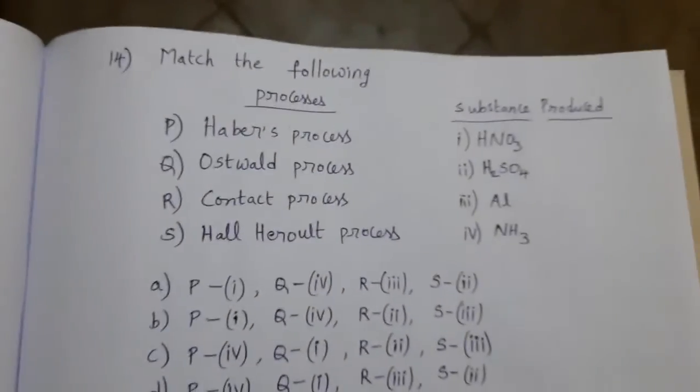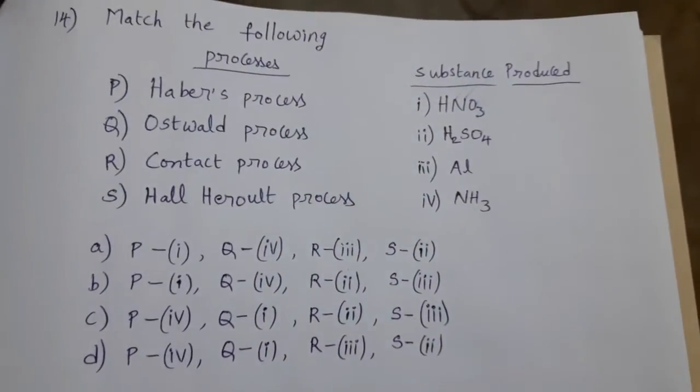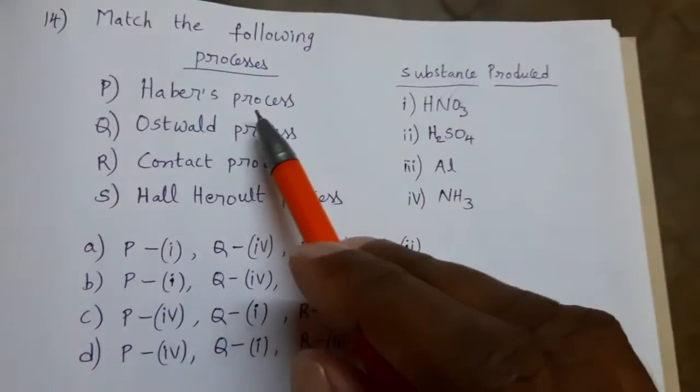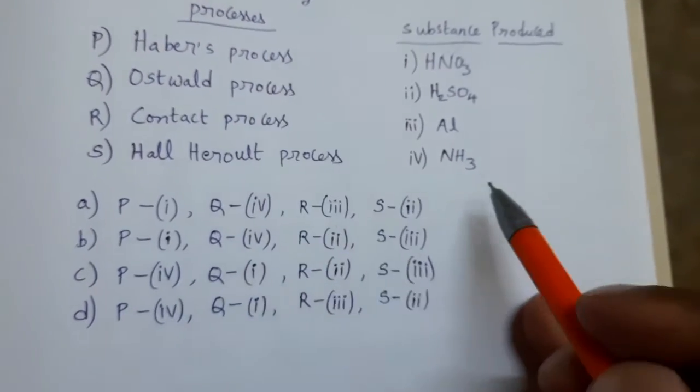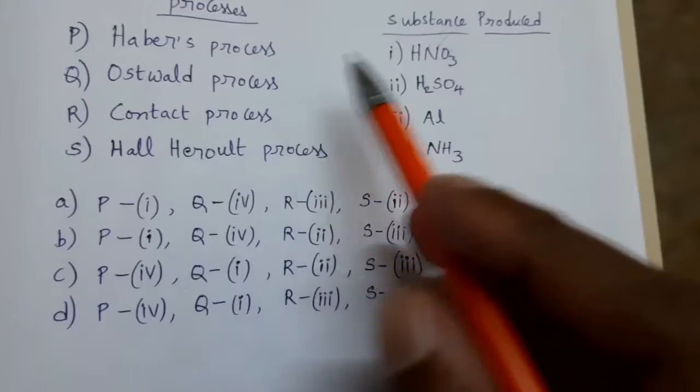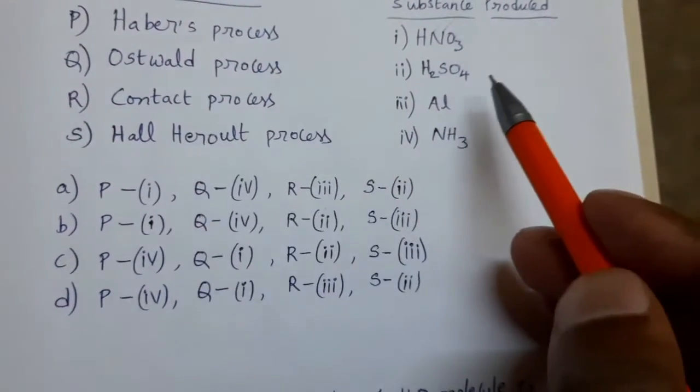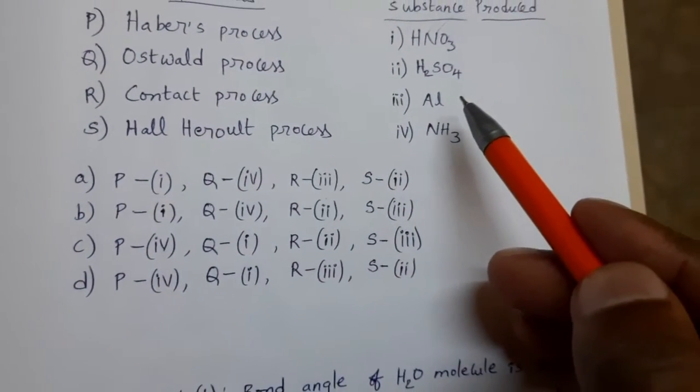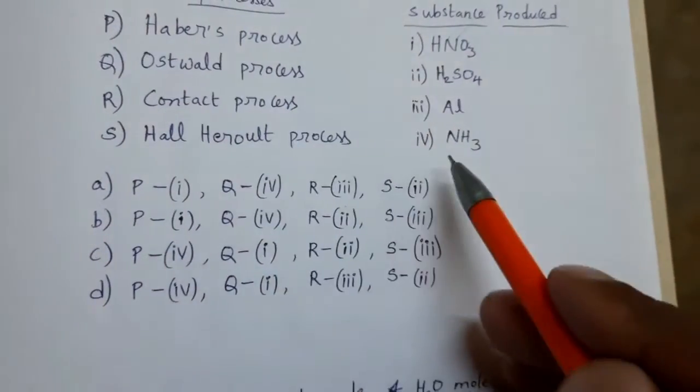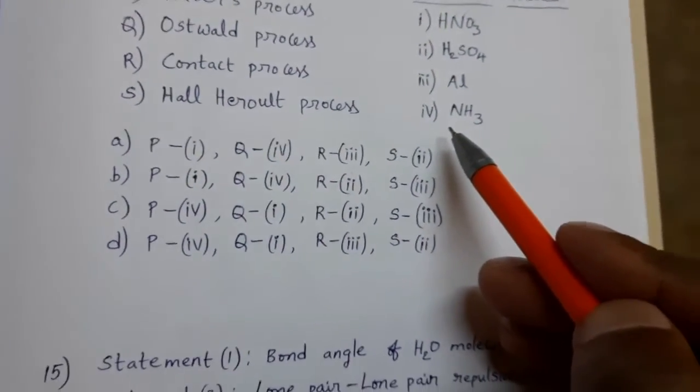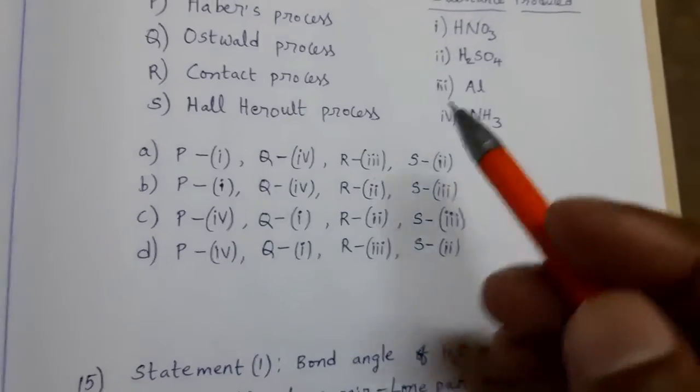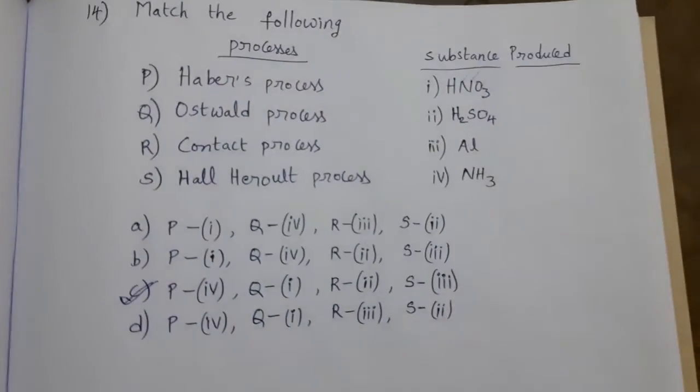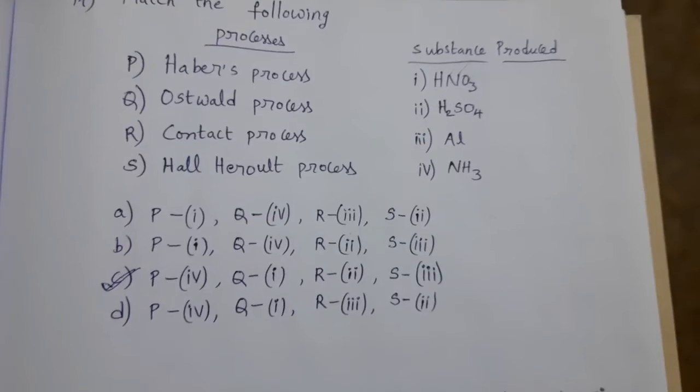Next one, see this. This one also match the following. Haber's process. Process name and the product obtained in these processes are given. From Haber's process we can get ammonia. Ostwald's process HNO3 is prepared. Contact process H2SO4 is manufactured. Hall-Herald process, it is related to aluminium. Then what is the suitable option? P4, Q1, R2, S3. Option C is the answer. Fourteenth question, option C is the answer.